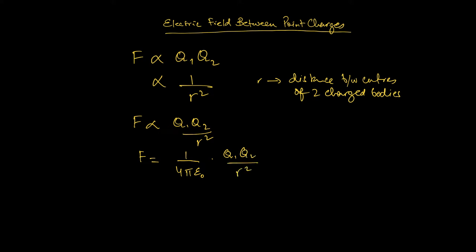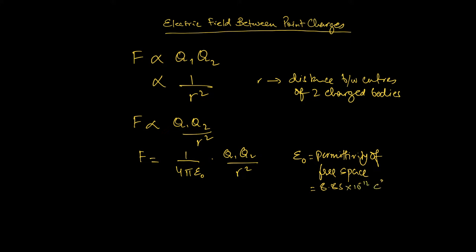We can define this constant epsilon naught — epsilon naught, I beg your pardon — as the permittivity of free space. The value here is 8.85 times 10 to the negative 12 coulombs squared per Newton per square meter.